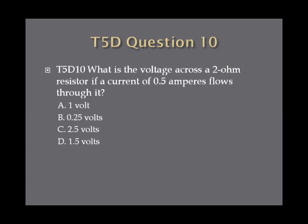Question 10: What is the voltage across a 2 ohm resistor if a current of 0.5 amperes flows through it? A. 1 volt. B. 0.25 volts. C. 2.5 volts. Or D. 1.5 volts.